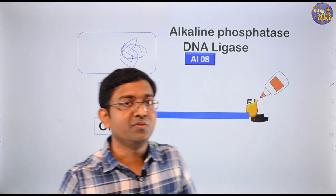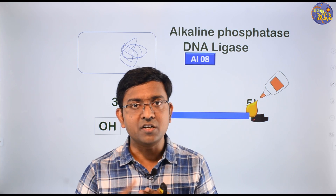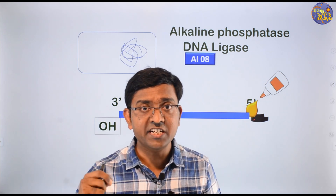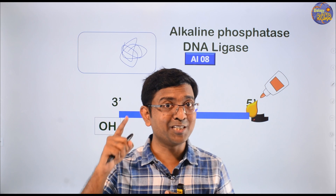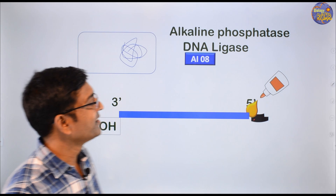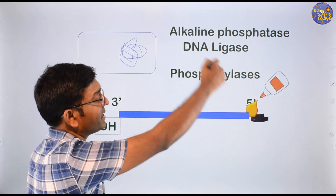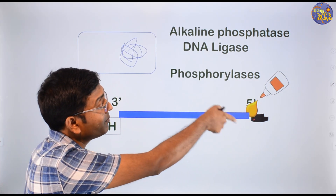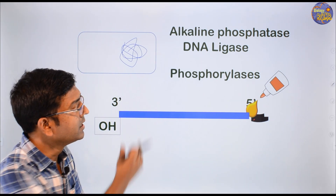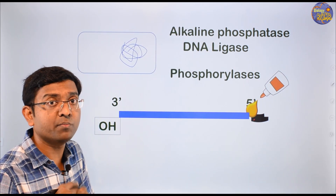An important recall: during DNA replication, there are two strands formed — one is a continuous strand and the other is a discontinuous strand. Which strand needs DNA ligase? Comment below if you know. After DNA ligase joined the DNA, alkaline phosphatase was used to remove the phosphate group. Then phosphorylase is used to re-attach the phosphate group so the plasmid becomes circular again. These enzymes can appear in odd-man-out MCQ questions.